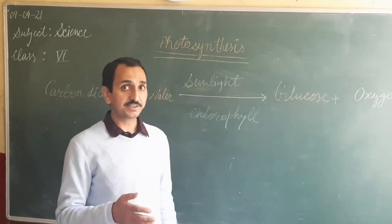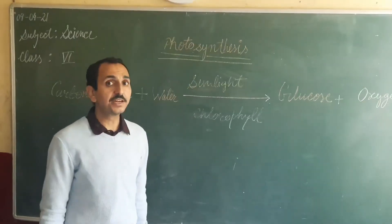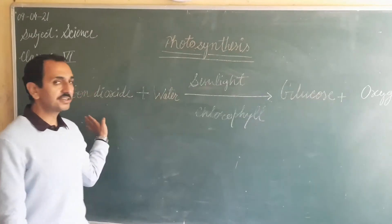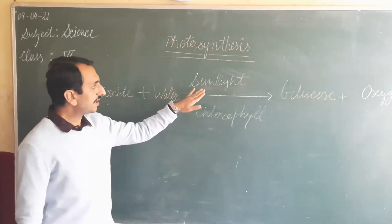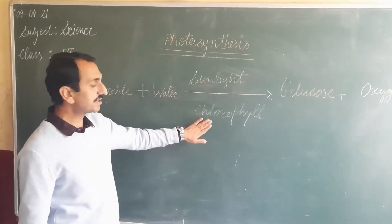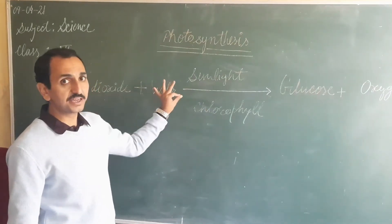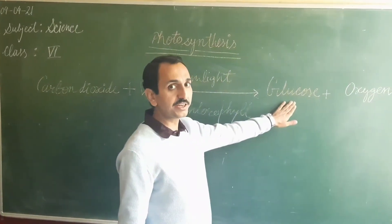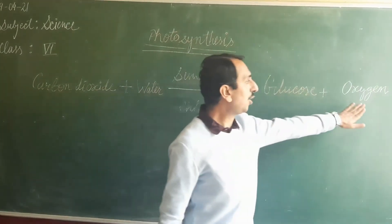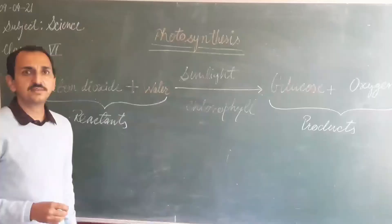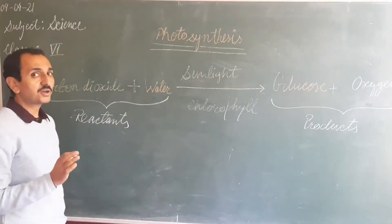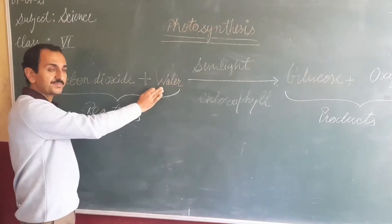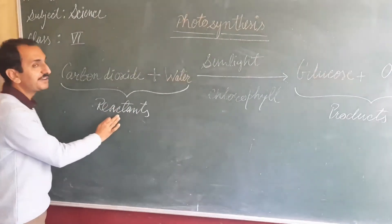As we discussed yesterday about photosynthesis and its equation: carbon dioxide and water are the raw materials. In the presence of sunlight and the green pigment chlorophyll, plants prepare their food. What is produced? Glucose — the food material which is a carbohydrate — and oxygen gas is released. So the raw materials carbon dioxide and water are known as reactants.